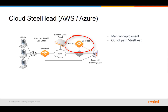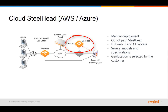The traffic is optimized using the primary interface. It has full web user interface and CLI access. Several models with different specifications can be deployed depending on the purchased license. Geographical location can be selected by the user when deploying the instance.